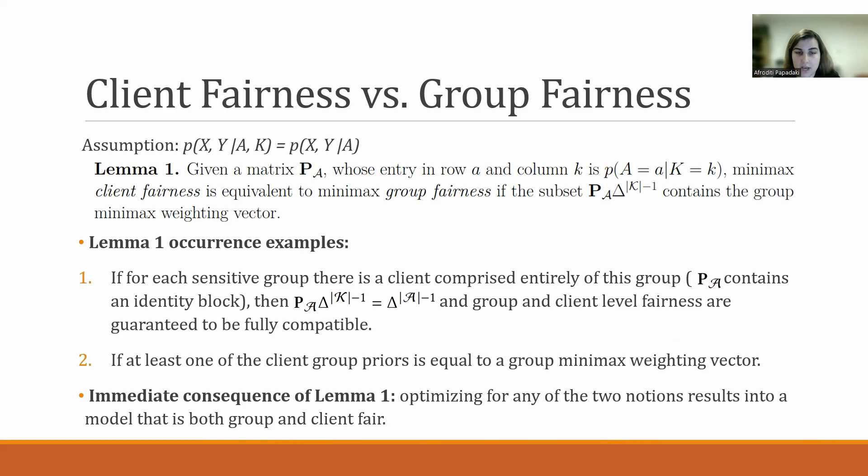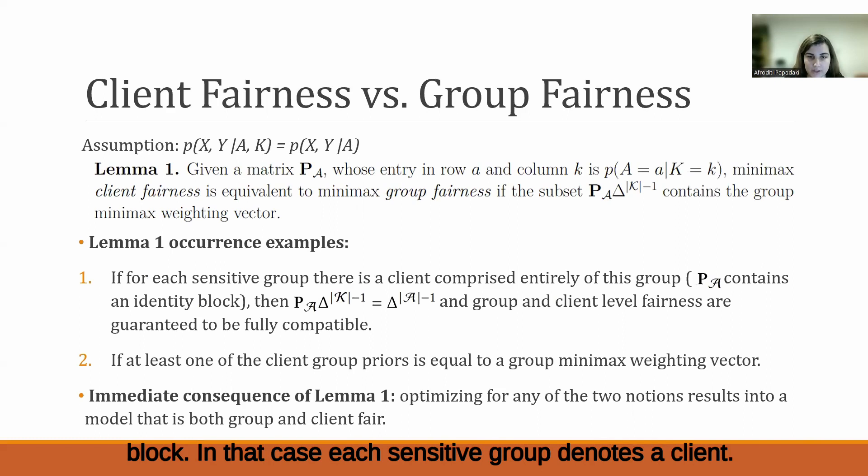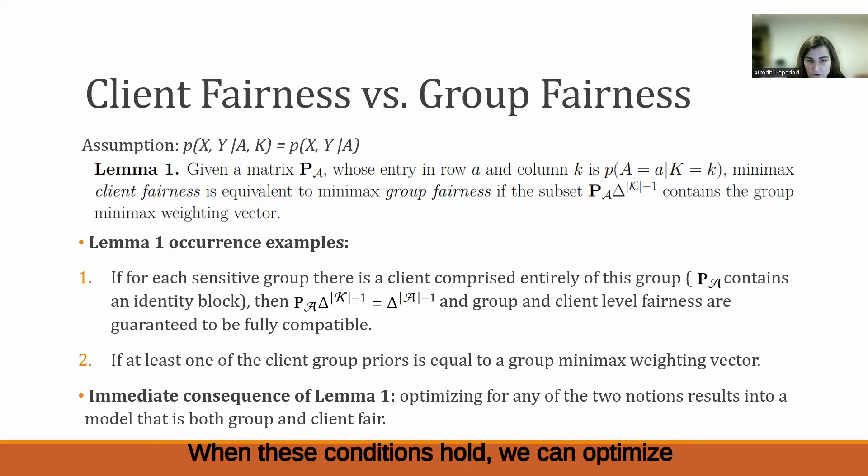This could happen, for example, if the matrix contains an identity block — in that case, a sensitive group denotes the client — or if at least one client's group prior is equal to the group minimax weighting coefficient. When these conditions hold, we can optimize for either of the two notions and end up with a model that is both client and group fair.